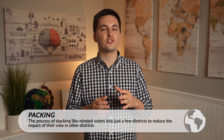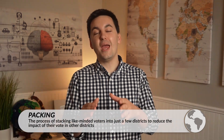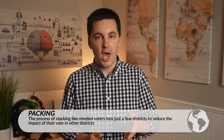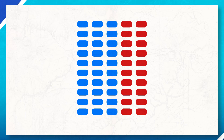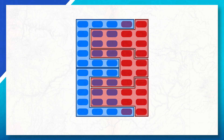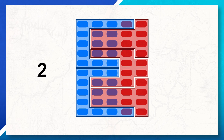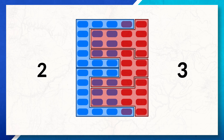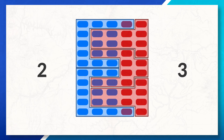Another tactic that is used is called packing. This is where like-minded voters are stacked into just a few districts. This may allow the opposing party to win some districts; however, it'll diminish their overall ability to win in all the other districts. We can go back to our example of the red party gerrymandering districts as an example of packing. Notice that there are two districts that are now all blue — this allows the blue party to win those two districts, but tips the scale in favor of the red party in all the other districts. It's important to highlight that both parties in the United States use gerrymandering to try and get an advantage in elections.